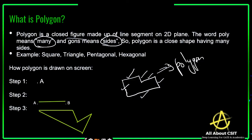A polygon is a closed shape having many sides. Different examples of the polygon are square, triangle, pentagonal, hexagonal, and so on — many shapes. Whatever closed shapes you observe in your daily life, you call them polygons. For example, daily you are watching your screen — the screen is a polygon shape, specifically a rectangle.